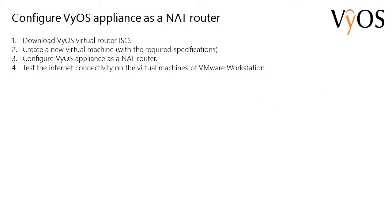This is how we are going to deploy and configure the VyOS appliance as a NAT router. First we will download the VyOS virtual router ISO file from the internet. Then I will create a new virtual machine with the required hardware specifications, configure VyOS as a NAT router, and finally test the internet connectivity for my virtual machines.